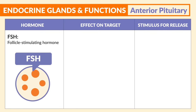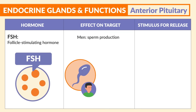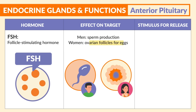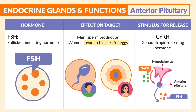The next one is FSH, the follicle-stimulating hormone. In men, sperm production is the effect on the target, and for women, ovarian follicles for the release of eggs. The stimulus for release is GnRH, the gonadotropic releasing hormone.